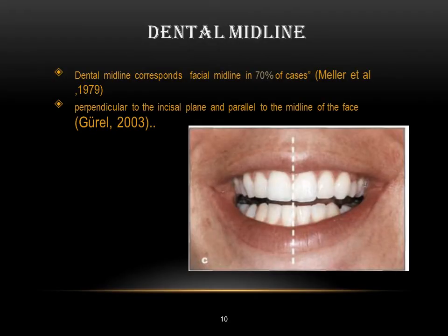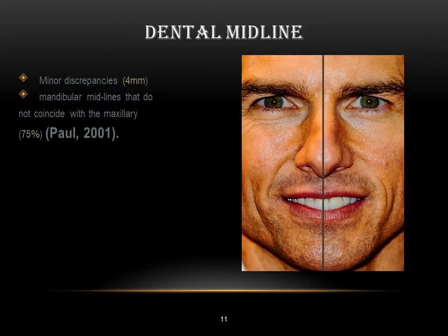From the frontal view, I also have the dental midline. In 70% of cases, it corresponds with the facial midline and is parallel to it. Any shifting of the dental midline from the facial midline should affect our design. If the shift is less than 4 mm, we can consider it normal and do our smile design according to the dental midline.